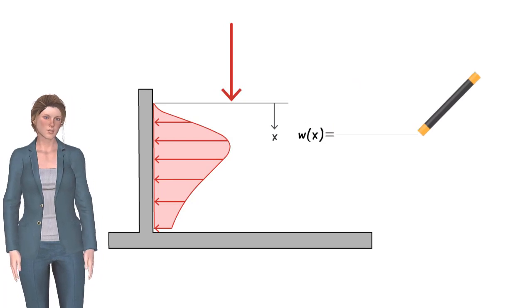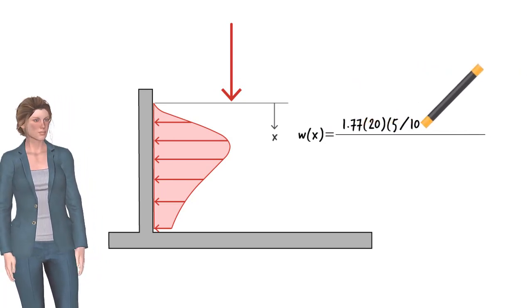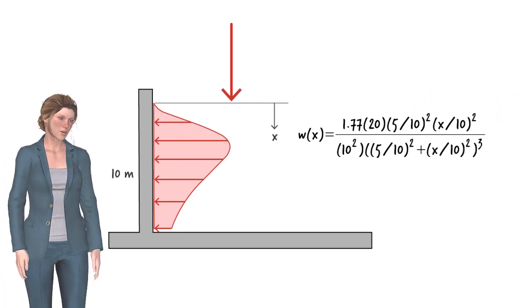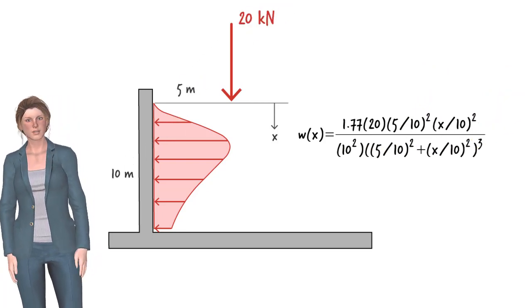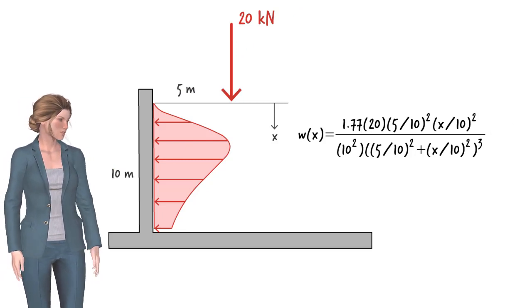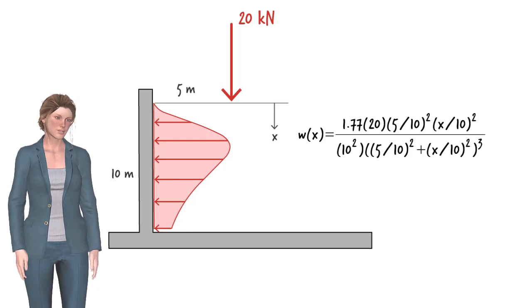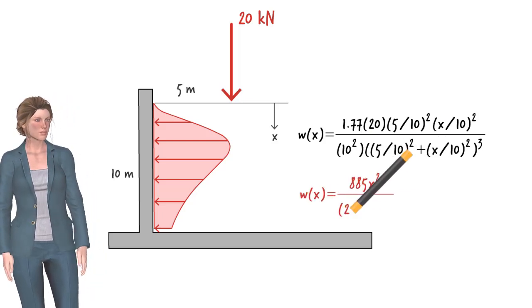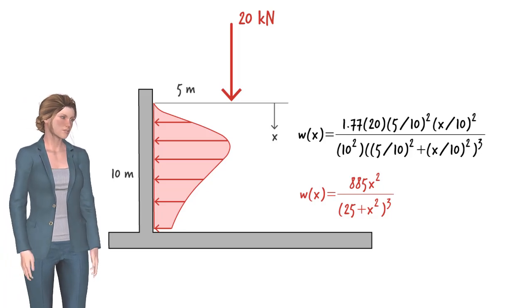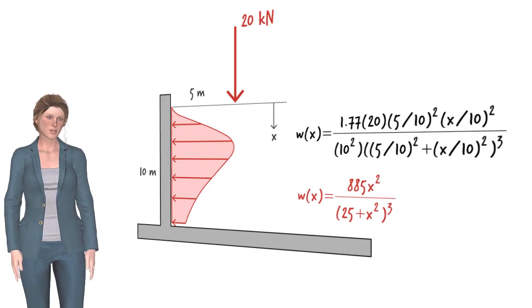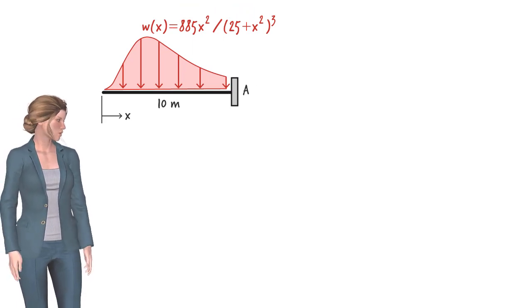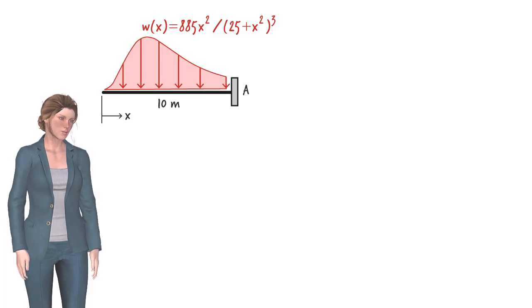The equation for this curve uses 10 meters for the height of the wall, 20 kilonewtons for the weight of the vehicle, and 5 meters for the distance from the wall to the center of gravity of the car. Simplifying the equation, we get the load distribution function. Viewed as a cantilever beam, the wall and the distributed load acting on it can be shown accordingly.